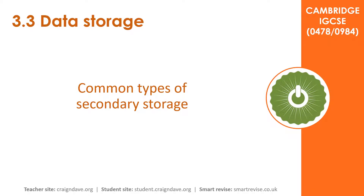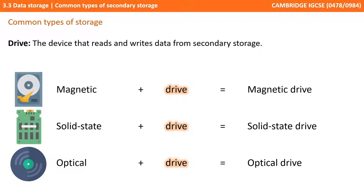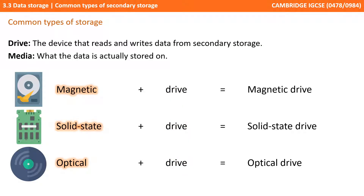In this video, we take a look at the common types of secondary storage, including magnetic, optical, and solid state. The device that reads and writes data from secondary storage is generally referred to as the drive. What the data is actually stored on is referred to as the media.